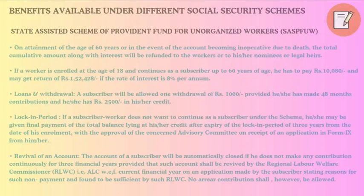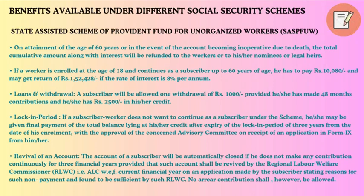Benefits under the State Assisted Scheme of Provident Fund for Unorganized Workers (SASPF-UW): on attainment of age 60 or in the event of the account becoming inoperative due to death, the total cumulative amount along with interest will be refunded to the worker or his nominees or legal heirs. If a worker is enrolled at age 18 and continues as a subscriber up to 60 years, he pays 10,80 rupees per year and may get a return of 1,52,428 rupees if the rate of interest is 8% per annum. Loans and withdrawal: a subscriber will be allowed one withdrawal of 1,000 rupees provided he/she has made 48 months of contributions and has 2,500 rupees in credit.